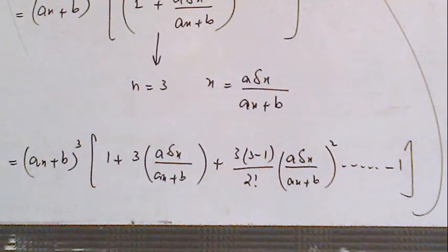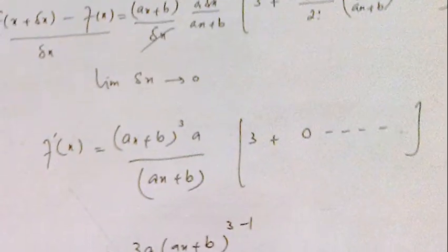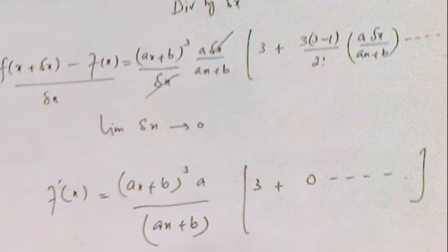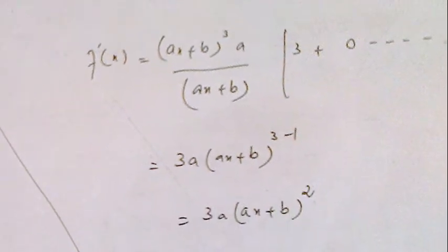We use this formula from 2.1. Now we take common aδx/(ax + b), take the limit, and this is the simple way to solve the question.